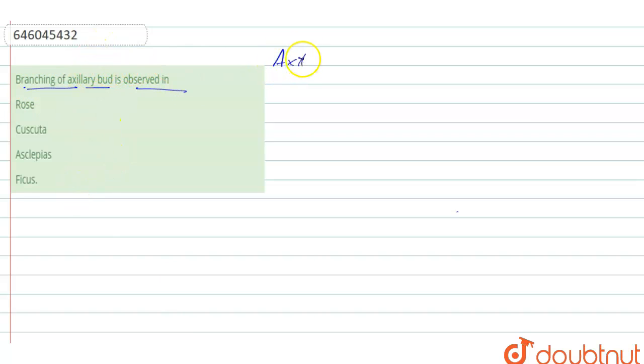These axillary buds are the lateral buds, and these lateral buds can be embryogenic or organogenic shoots.